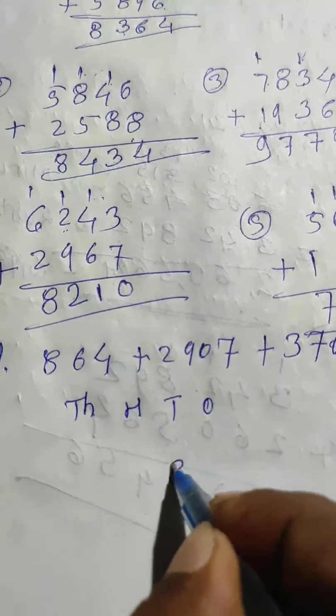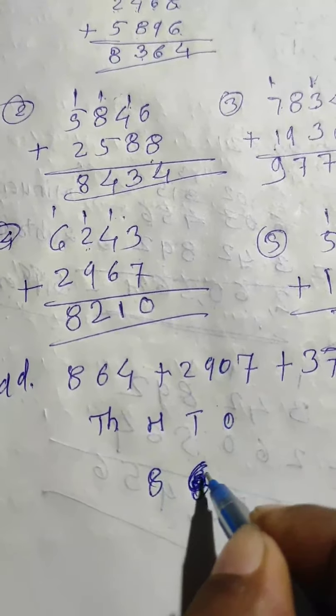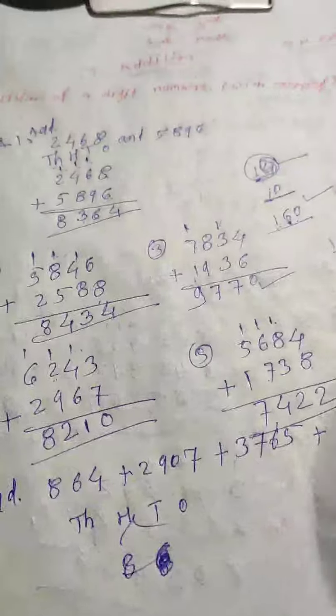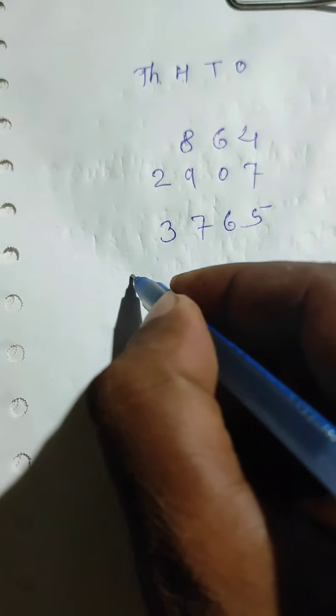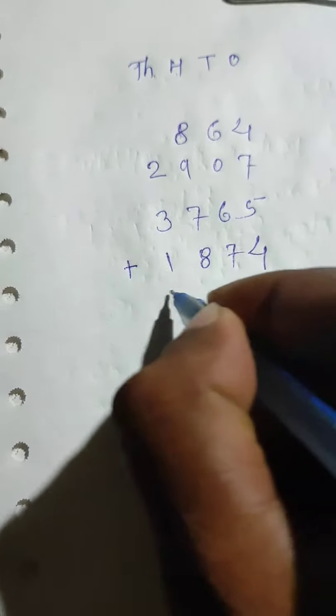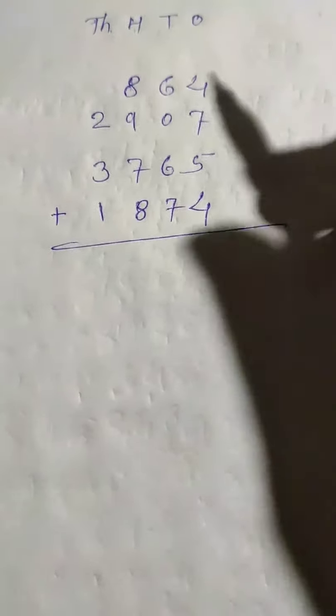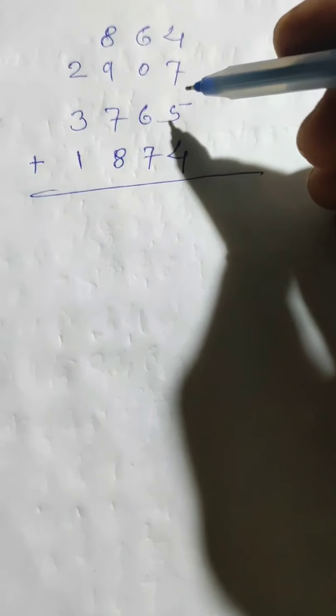Eight hundred sixty four - in hundreds place we write eight. Next, two thousand means two in thousands place: two thousand nine hundred seven. Then three thousand seven hundred sixty five, then plus one thousand eight hundred seventy four. Using grouping and associative property of addition for more than two numbers.